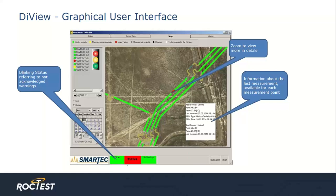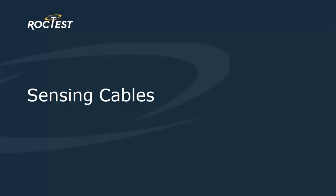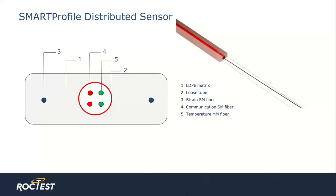The DIVIO user interface is designed to be user friendly and provides an immediate indication of the global state of the system and its components. It is possible to zoom in and zoom out by simply scrolling and have information on the last measurements available, or a blinking status referring to unacknowledged warnings by the operator. Now let's look at the sensing cables family. The first is the smart profile, which is a combined strain and temperature sensor. The sensor has two fibers for strain, two fibers for data communication, and two fibers for temperature sensing — all encapsulated in a polyethylene profile.